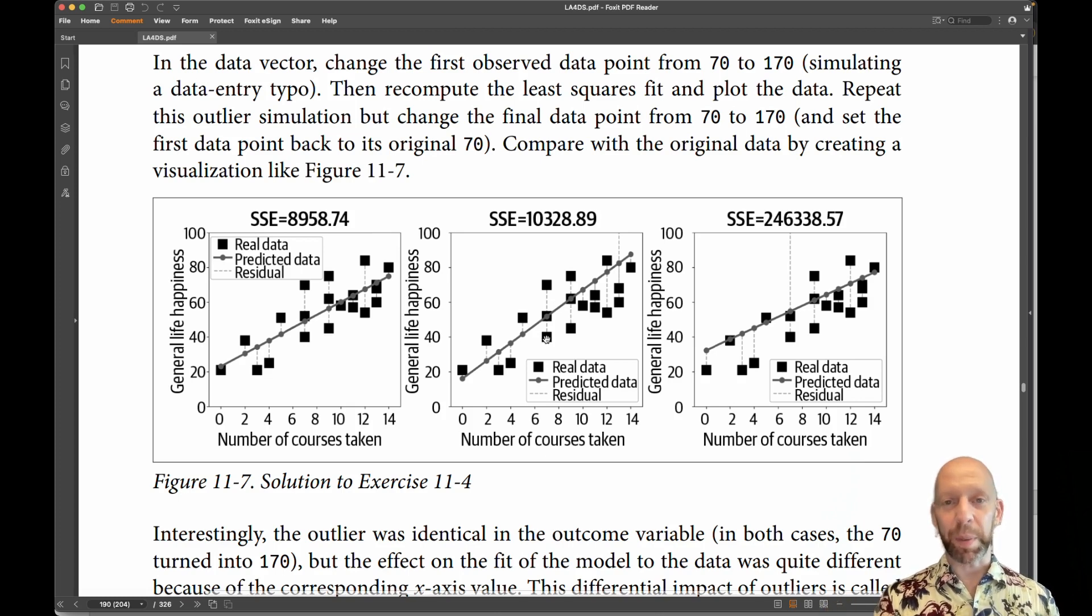What this means is that the exact same outlier numerically can have a different impact on the statistical result, depending on where it is in the data, in particular, whether it's close to the edges, like you see here, or whether it's close to the middle, like you see here.